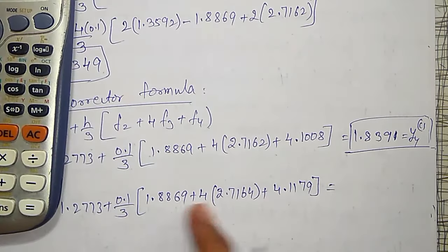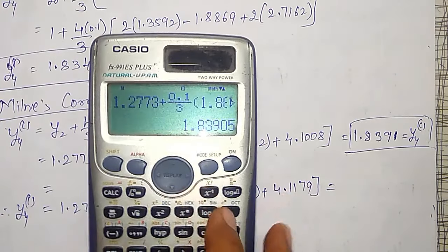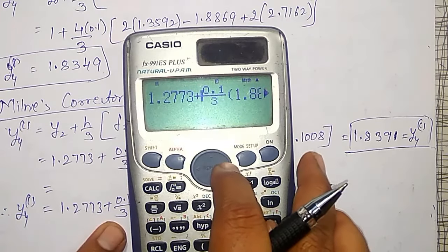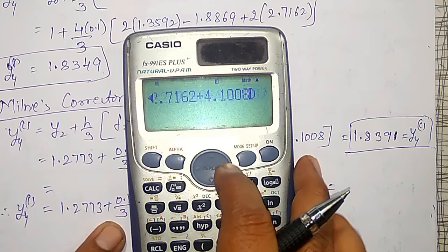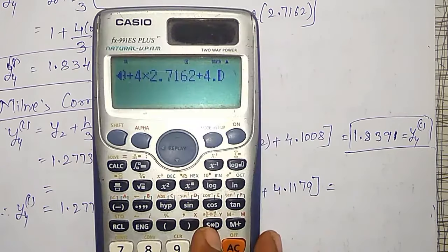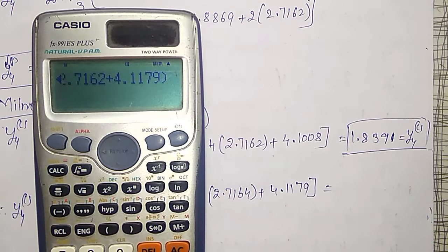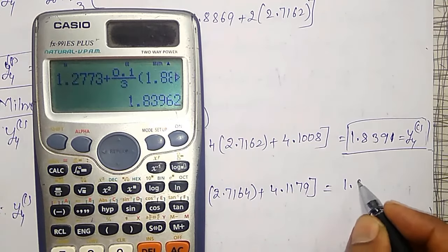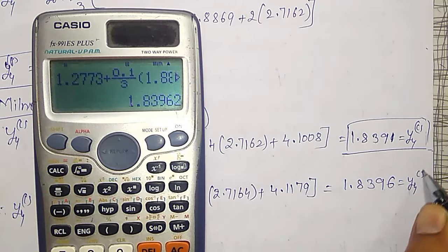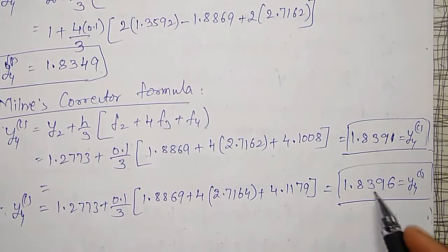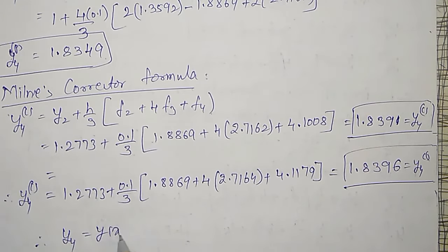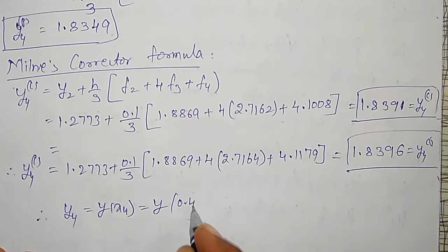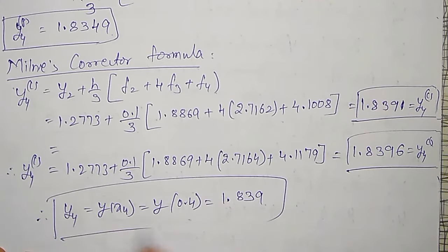Use that f4 here. Already this is operated in your calculator — if you are not operating AC, just press the button, you can check that 1.2773, 0.1 divided by 3, and everything is operated. Only the final f4 value I have to change to 4.1179, so that you can save your time. And my final answer I am going to get as 1.8396, which is my y4 corrector value. Equal up to 3 decimal places, y of 0.4 is equal to 1.839.